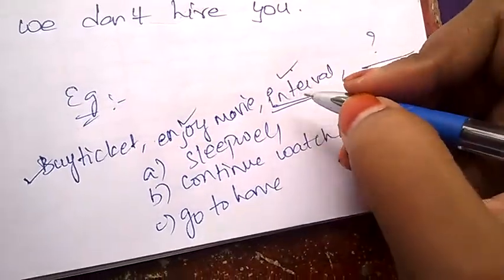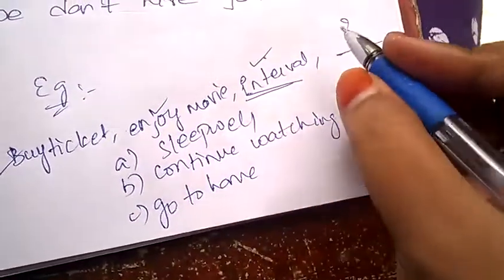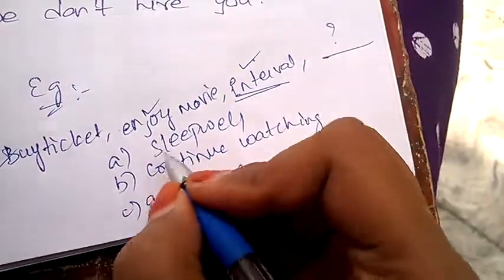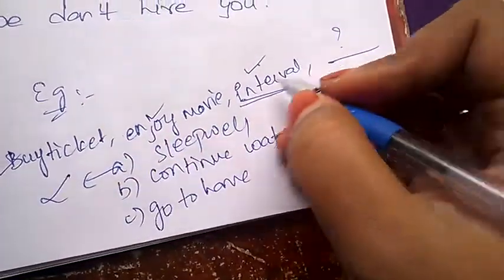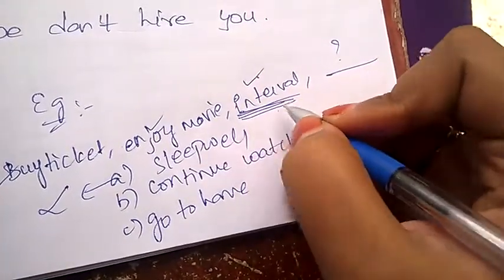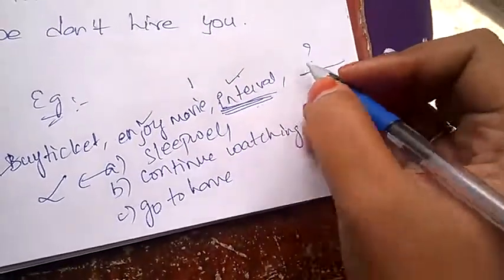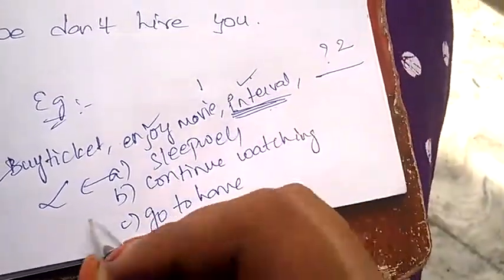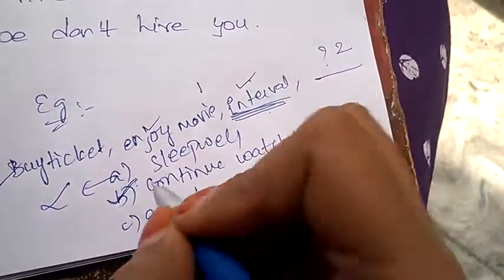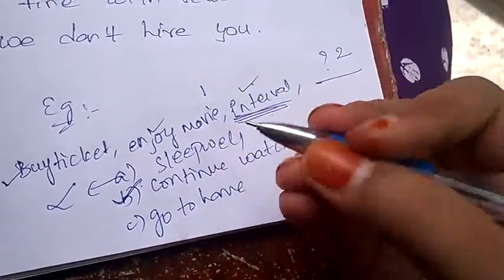You bought the ticket, you're enjoying the movie, you had an interval, and after interval what will you do? If they give interval, it means only part one of the movie has been completed. Still there is remaining. So continue watching will be the correct answer. Like this you need to use logic and common sense to guess the correct answers under word sequence.